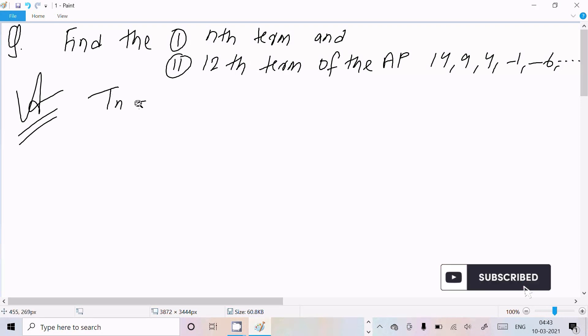The formula for nth term Tn equal to a plus n minus 1 into d. So a is the first term, so here we can write a, the first term is 14.